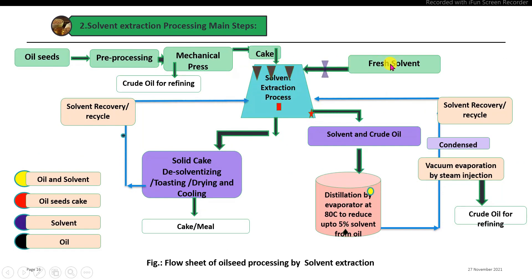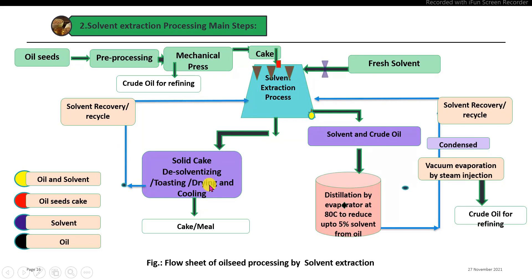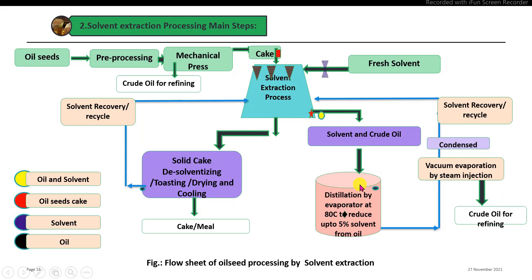Solvent extraction uses hexane solvent, which is sprayed on the cake in a continuous or batch-wise process. After extraction, the cake containing solvent is treated by desolventization — also called toasting and drying — to remove the solvent, which is then condensed, purified, and reused. The extracted miscella, which is the extracted solvent plus oil, is separated by evaporation, first reducing solvent content to 5 percent, then further by vacuum evaporation.